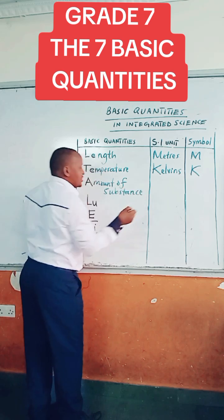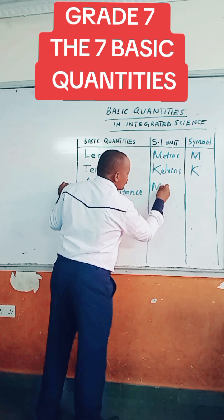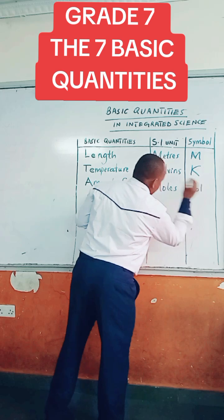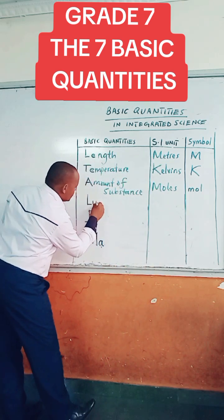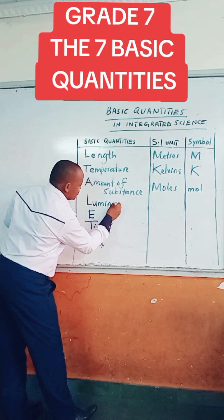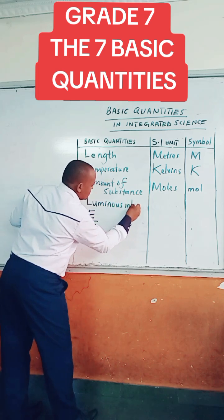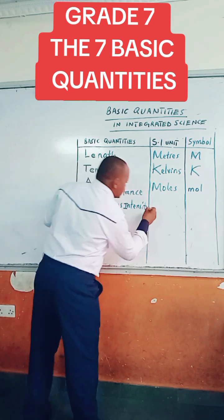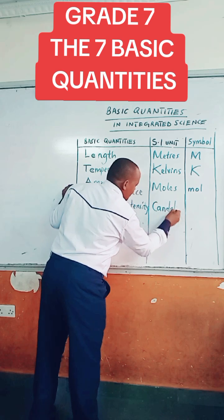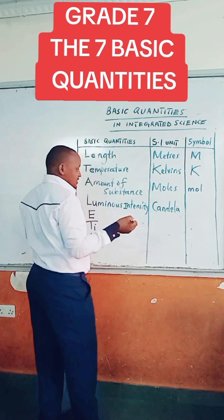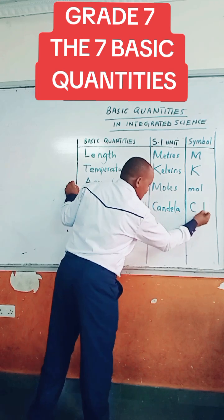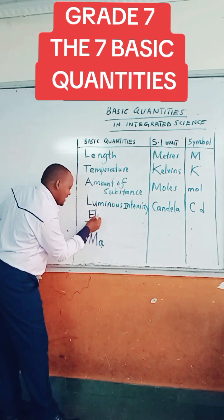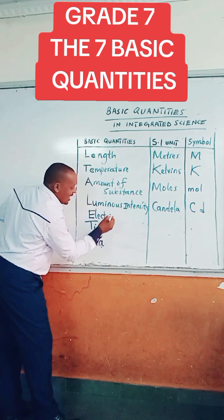As a unit is moles, abbreviated as MOL. Lu for luminous intensity. As a unit is candela, abbreviated as Cd — capital C, small letter D. E for electric current.